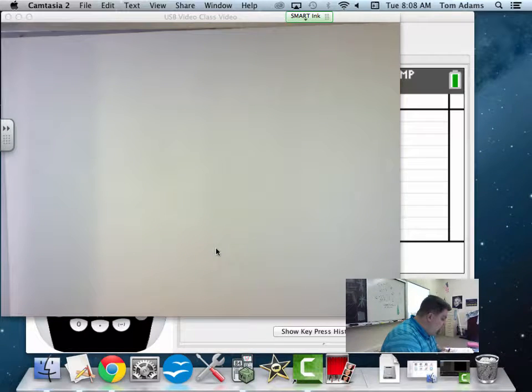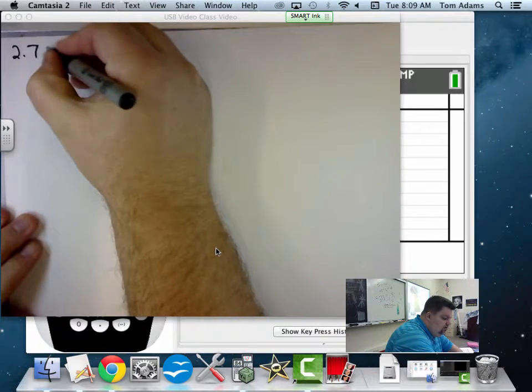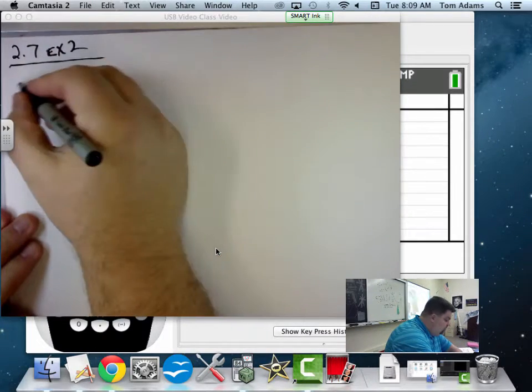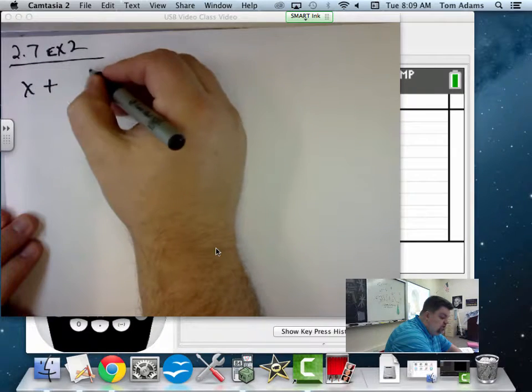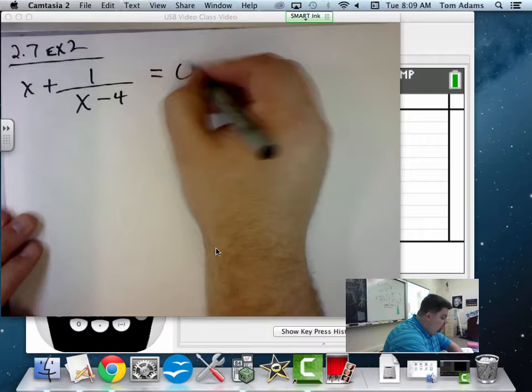All right, so now for example number two, similar scenario, we're given x plus 1 over x minus 4 equals 0.